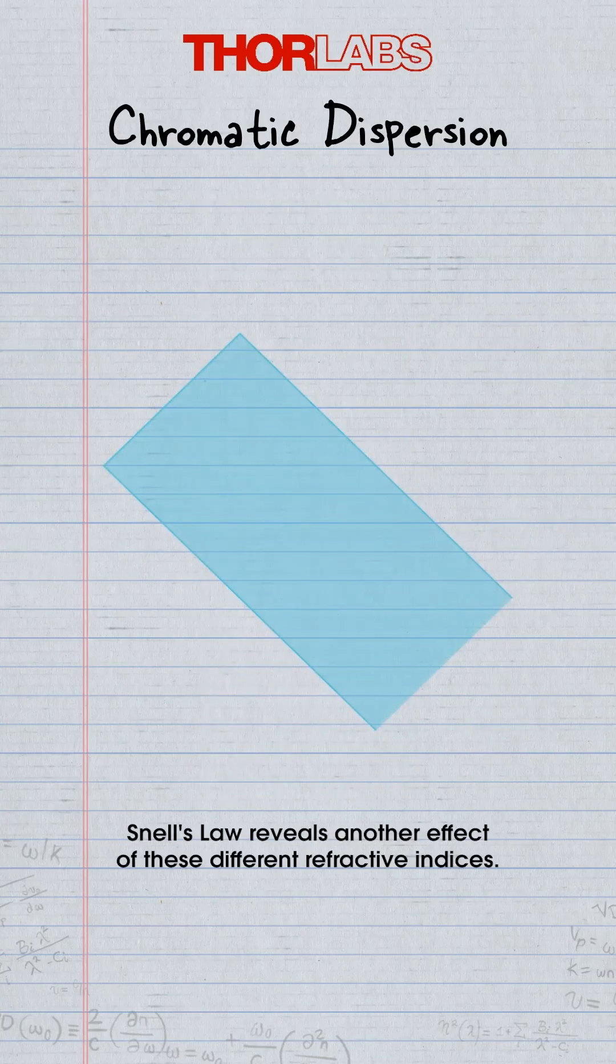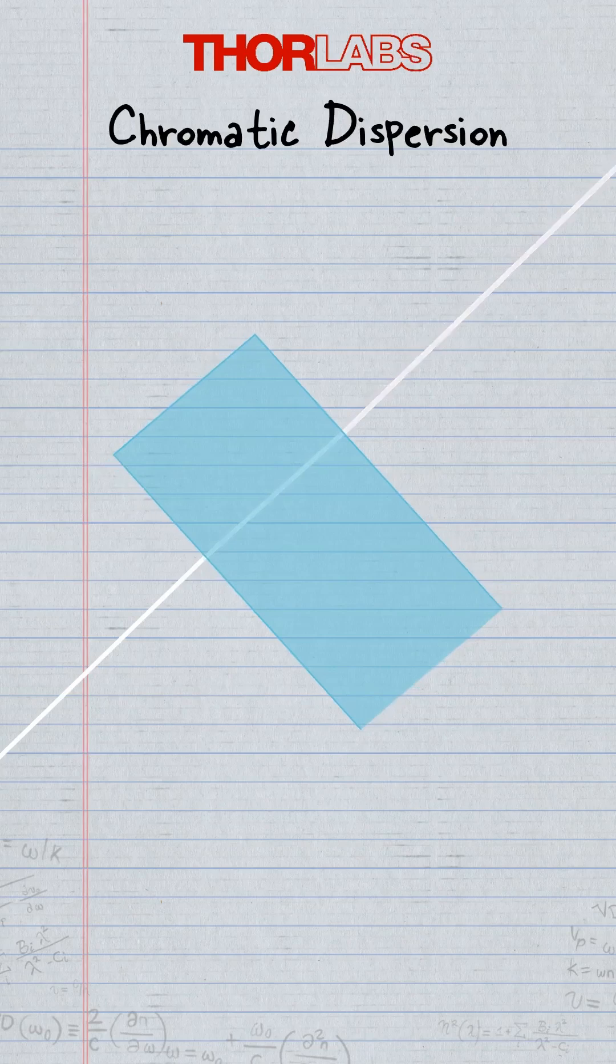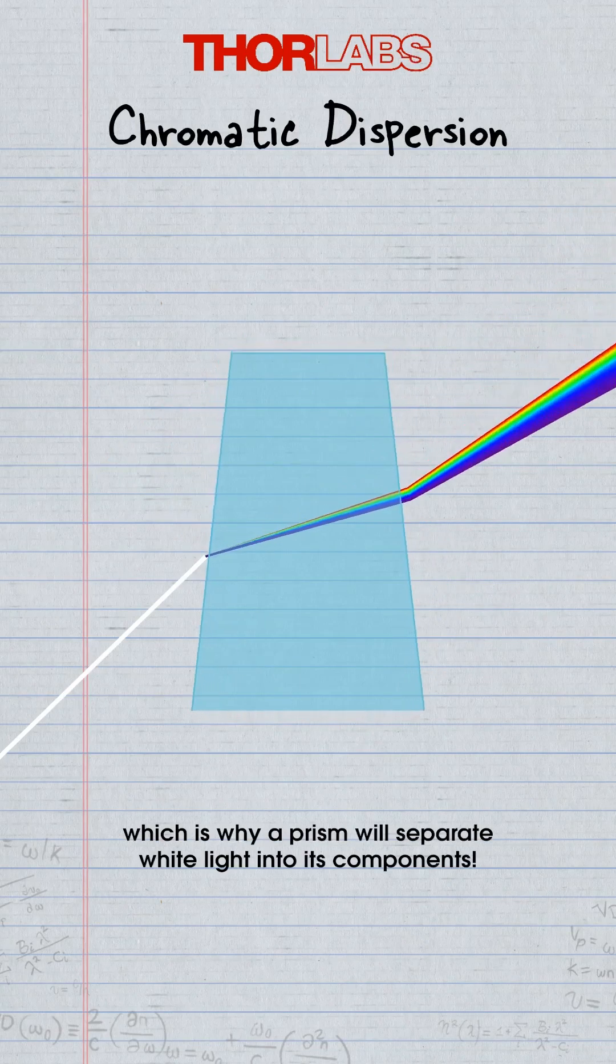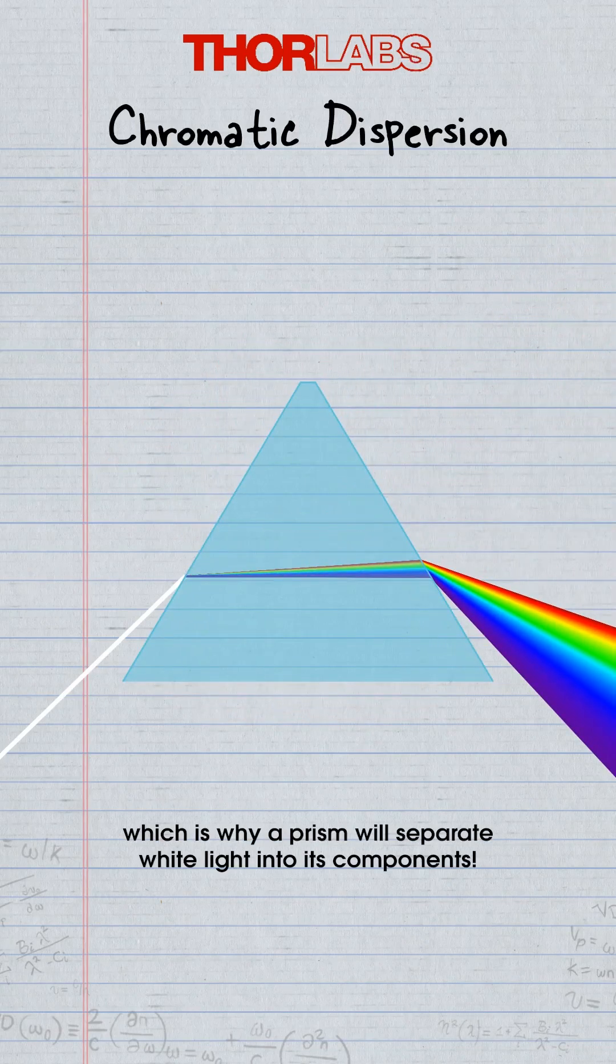Snell's law reveals another effect of these different refractive indices. Each wavelength refracts at a slightly different angle, which is why a prism will separate white light into its components.